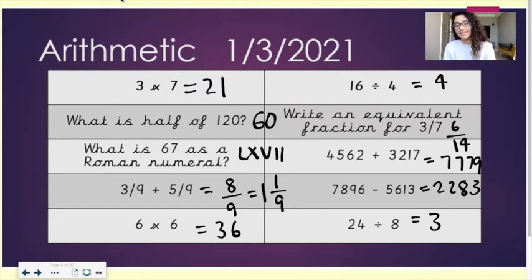6 times 6 equals 36. 16 divided by 4 equals 4.